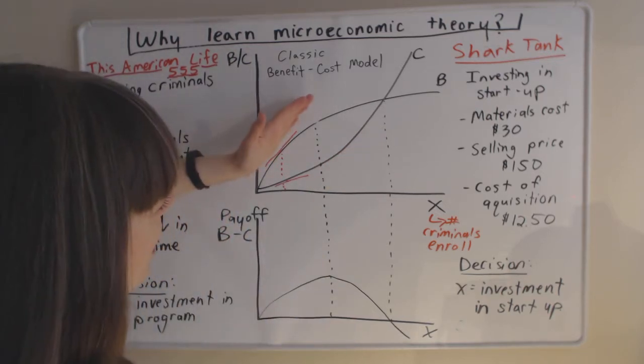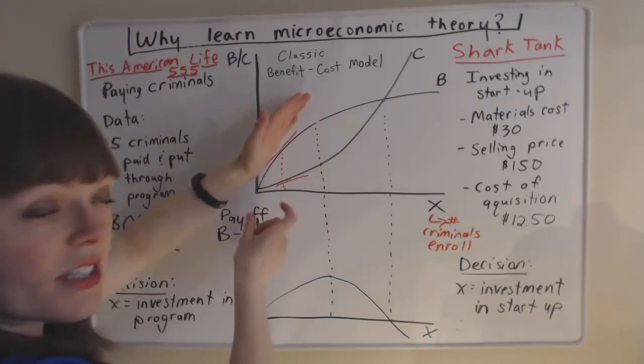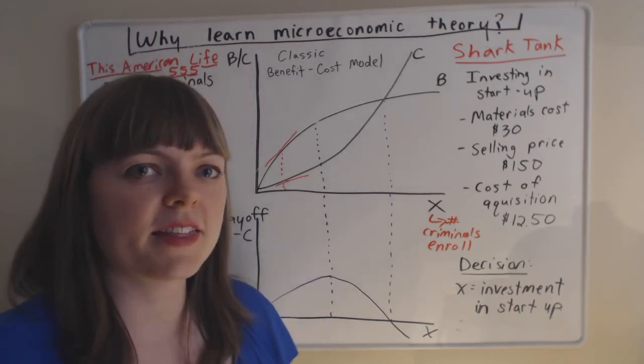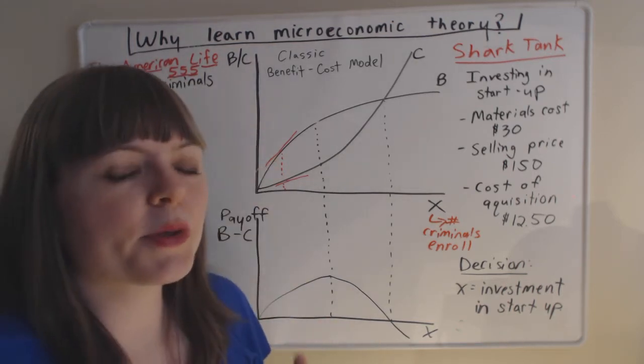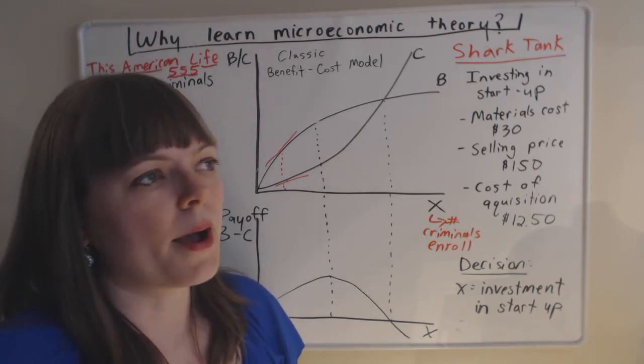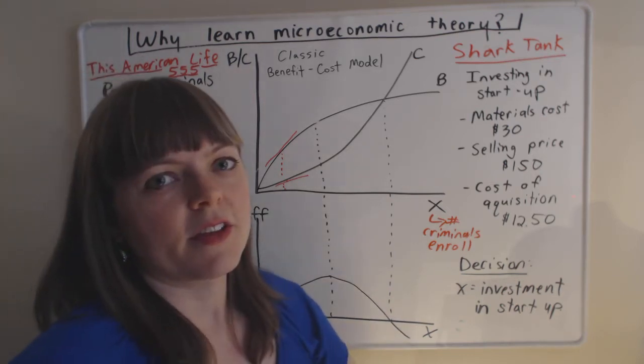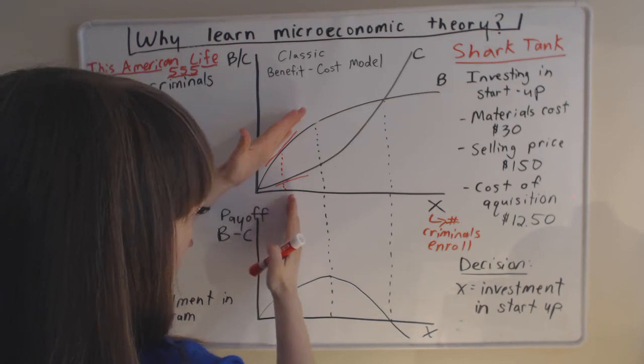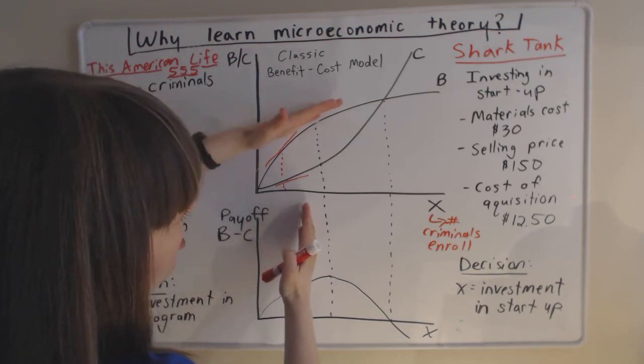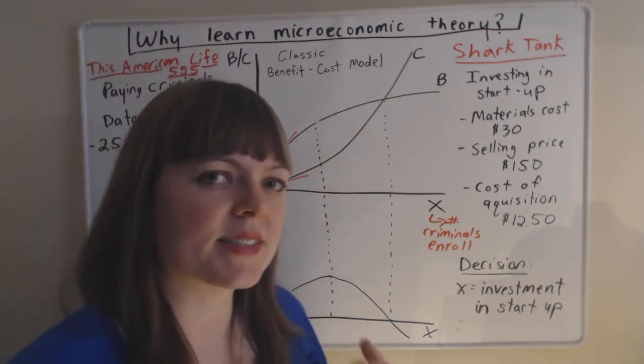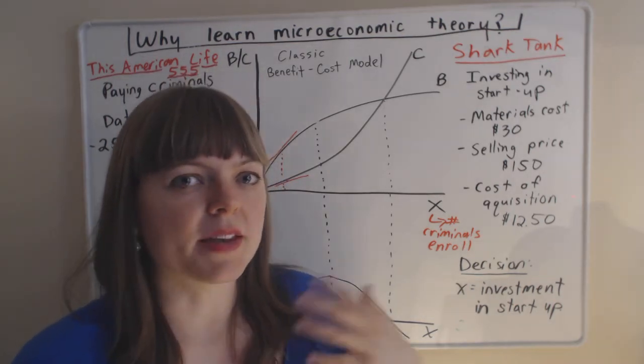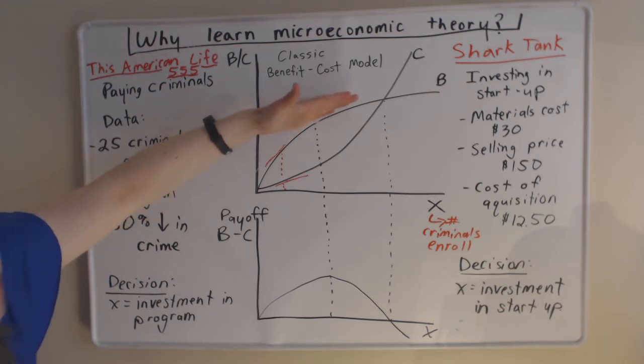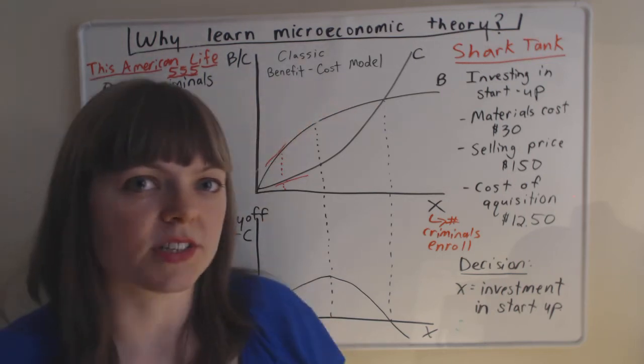What I think would happen is you've already got the most likely criminals in the first 25 that you took through the program. So who are you going to invite in the program next? You're going to invite people who might become criminals. Or people who have a history of crime but not violent crime. And you think they might turn to violent crime. So as you invite more and more people into the program, the marginal benefit decreases. Because these are people who are less and less likely to engage in violent crime anyway. So my guess is that the diminishing marginal benefit portion of this is what is going to drive your decision.